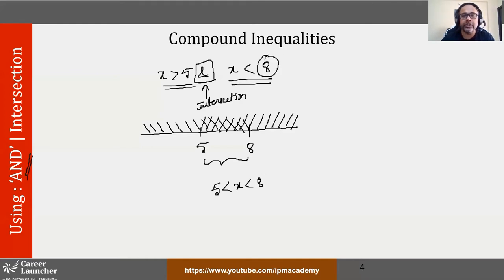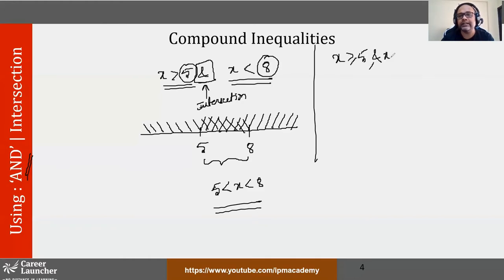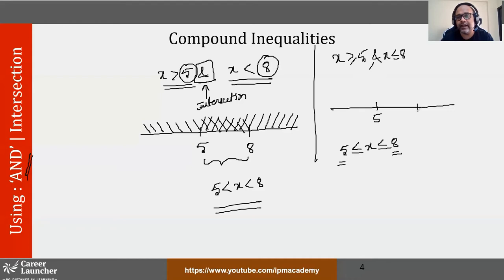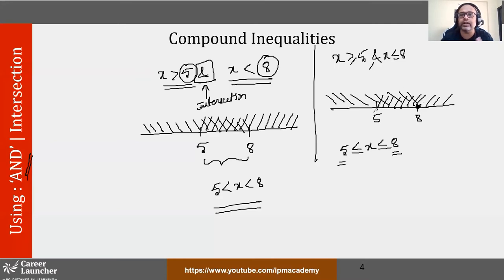For those of you who know the basics of set theory, AND means intersection. So I want the intersection of x greater than 5 and x less than 8. From the number line, your x is between 5 and 8. Now 8 was not included and 5 was not included, so in your final answer these are not included. Had it been x greater than or equal to 5 and x less than or equal to 8, then you would include 8 and 5 in your answers. 5 is included in both regions and 8 is also included in both regions, so both appear in the final answer.